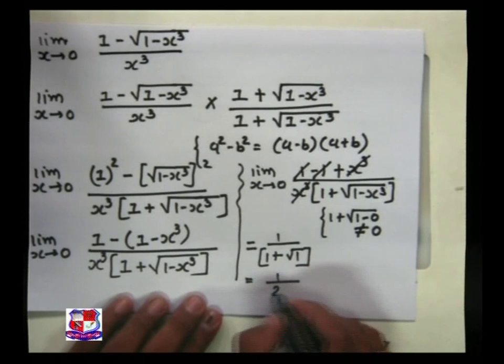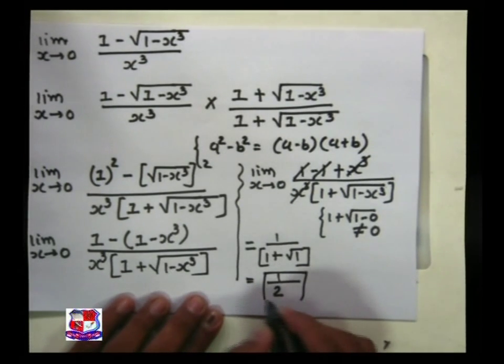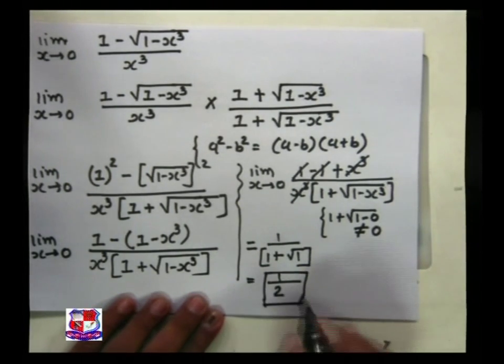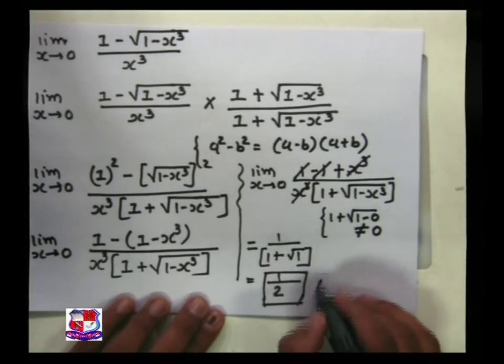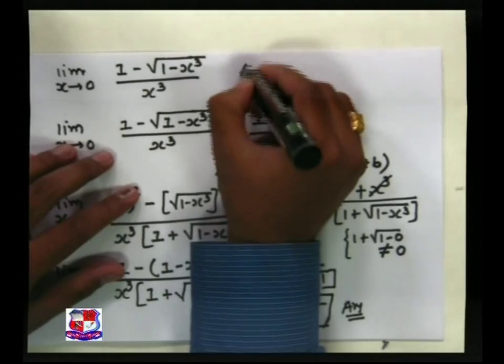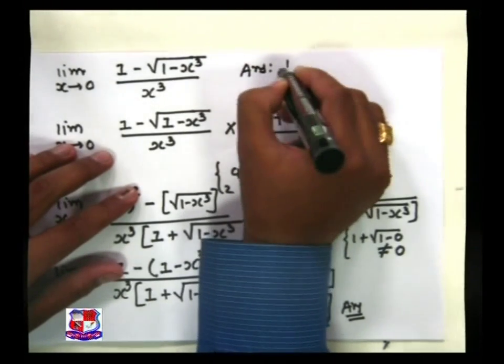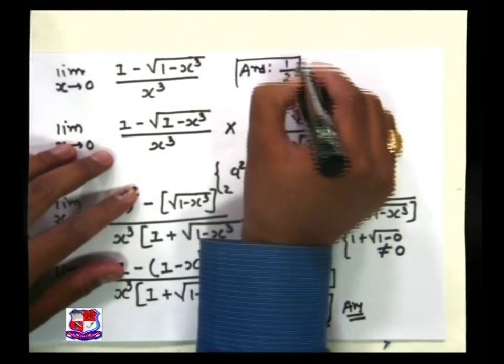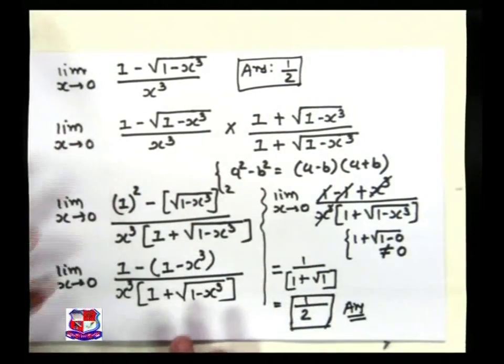And 1 plus 1 that is 2. So our answer is 1 upon 2. 1 upon 2 that is our answer and we write it here, answer is equal to 1 upon 2.